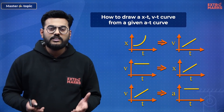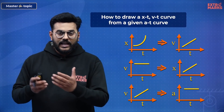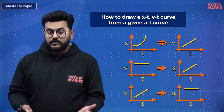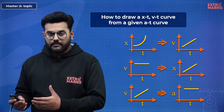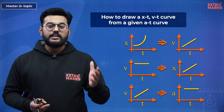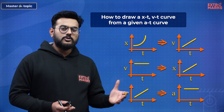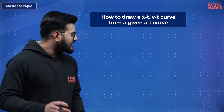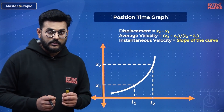We'll be busting all these problems. First, we'll discuss individually an XT, VT, and AT curve. Thereafter, we'll consider a case where we are provided with values of acceleration versus time, plot a graph, analyze the situation, and draw an XT and a VT curve.